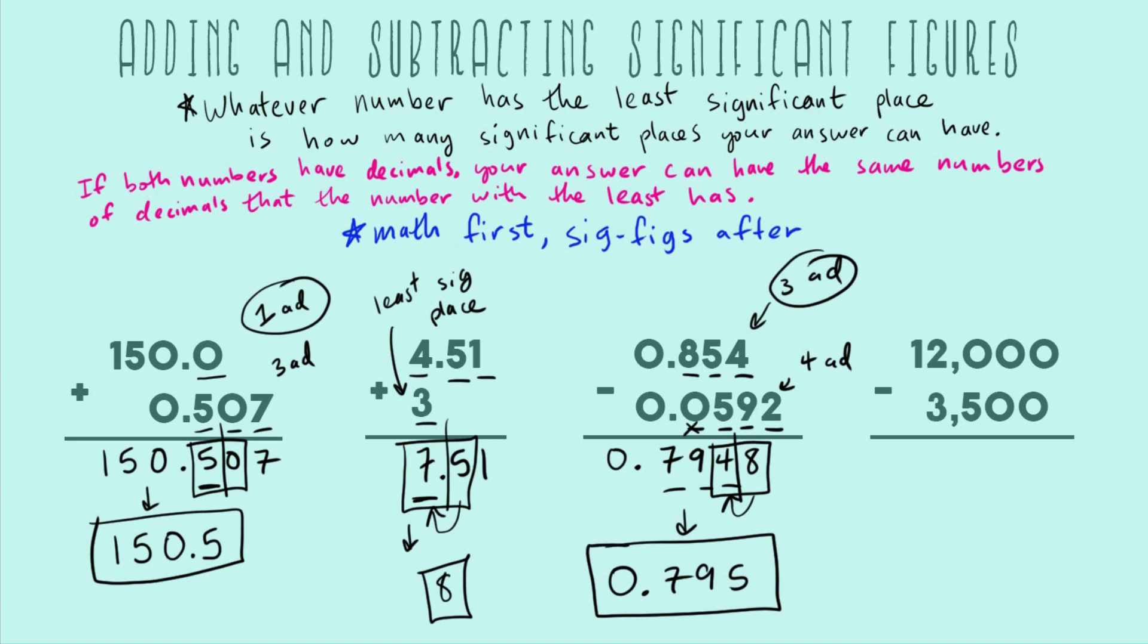Now we just have one more example. I think in some ways this is the hardest because neither of them have decimal points. We have to really follow significant places. First we're going to do the math like always. So we have 8,500 as our answer.